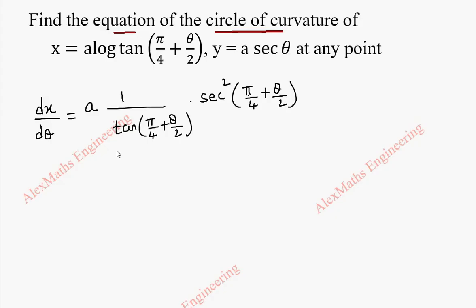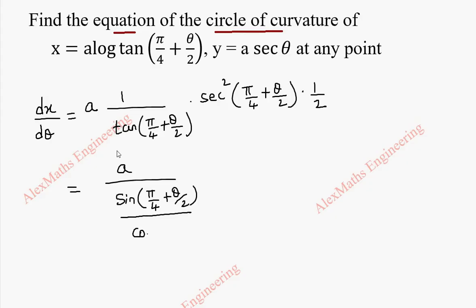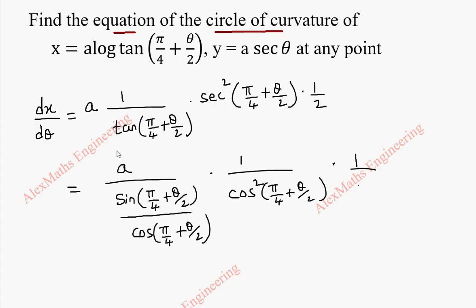Then by chain rule, the differentiation of π/4 + θ/2 is: π/4 is 0, θ/2 is half. Now we have to change everything into sin and cos form so that we can simplify easily. This can be written as sin(π/4 + θ/2) by cos(π/4 + θ/2), and this is 1 by cos²(π/4 + θ/2) into 1/2.